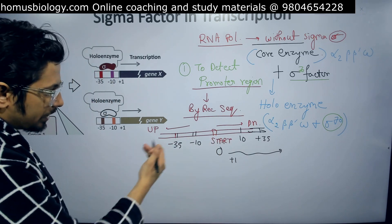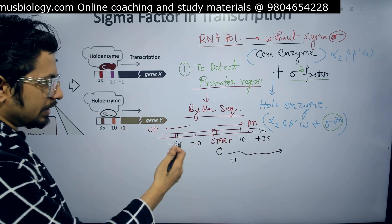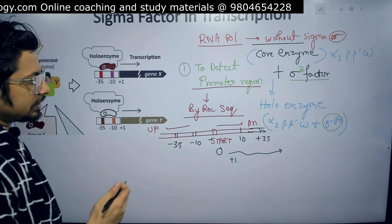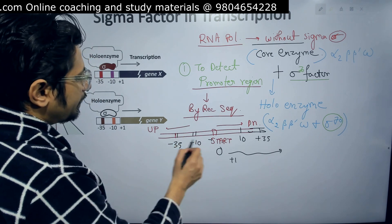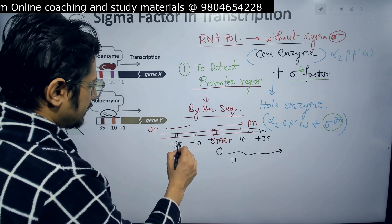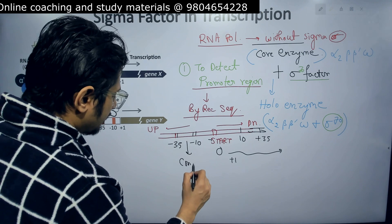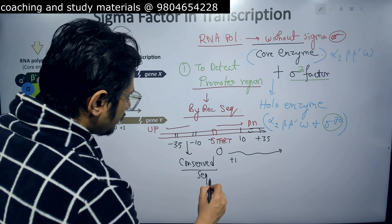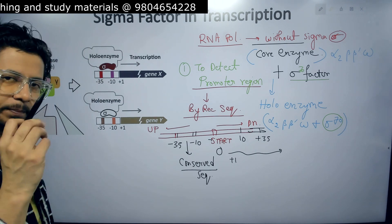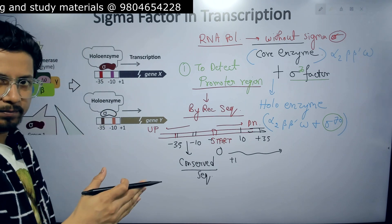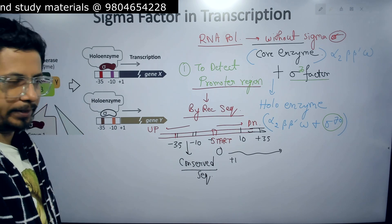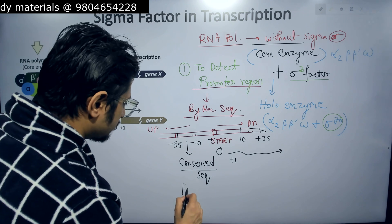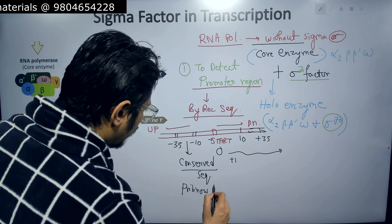Upstream of the start site, we have minus 35 which is far away, and minus 10, a little less far. The sequence at minus 35 and minus 10 is very conserved — conserved throughout evolutionary history — and a particular nucleotide pattern is repeated. That pattern is known as the Pribnow box.